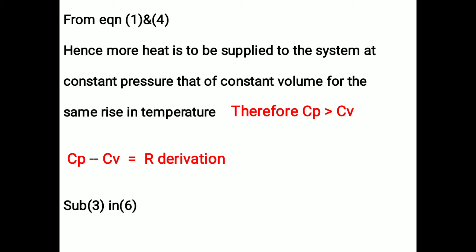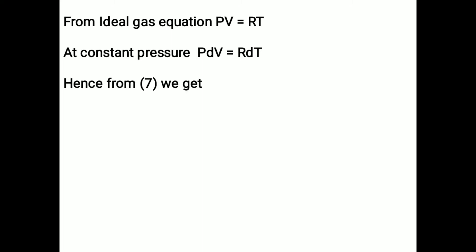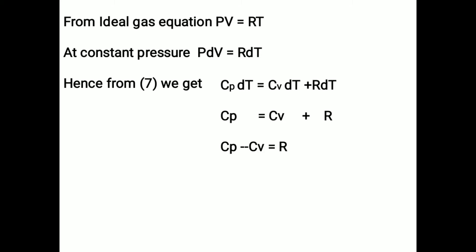Substituting equation 3 into equation 6, we get Cp·dt equals Cv·dt plus p·dv (equation 7). From the ideal gas equation, pv equals RT. At constant pressure, p·dv equals R·dt. Hence, from equation 7, Cp·dt equals Cv·dt plus R·dt. Cancelling dt terms, Cp equals Cv plus R. Finally, Cp minus Cv equals R.